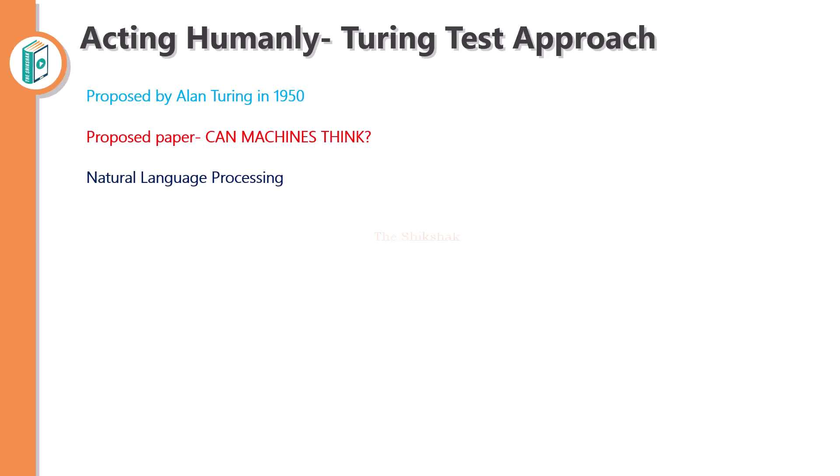Not only in English — we can communicate with the system in any other language that can be understood by the machine. Second is knowledge representation. Knowledge representation represents information about the world; it stores what it knows or what it hears. Third is automated reasoning — it is used to store information, to answer questions, and to draw new conclusions.